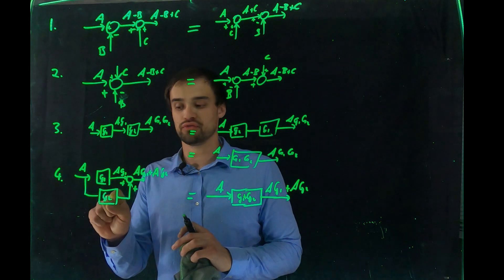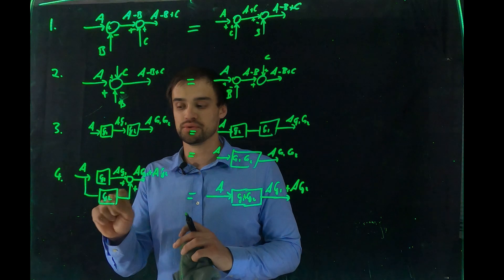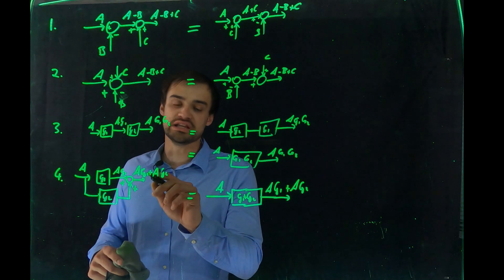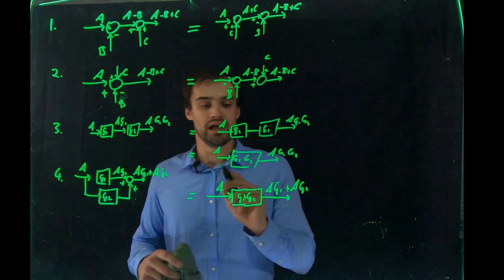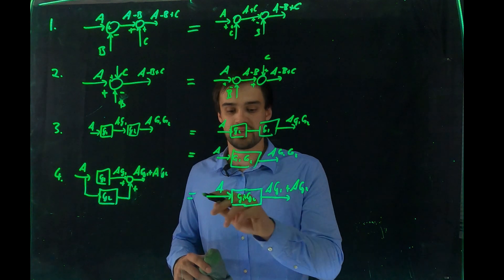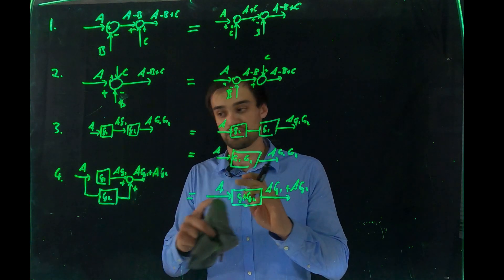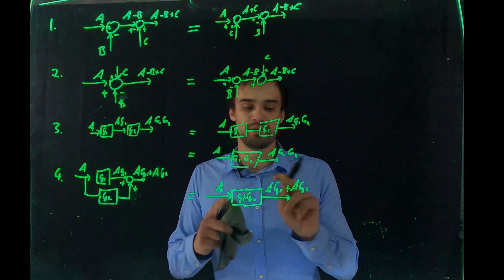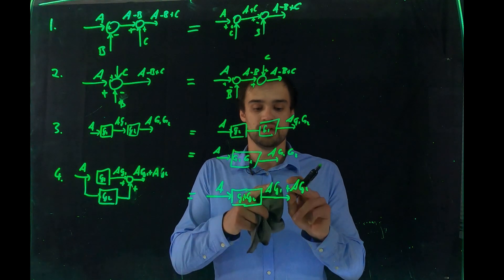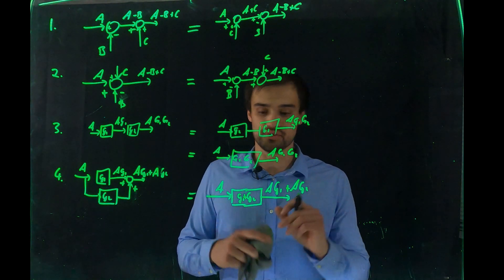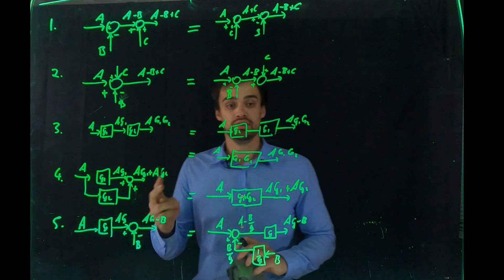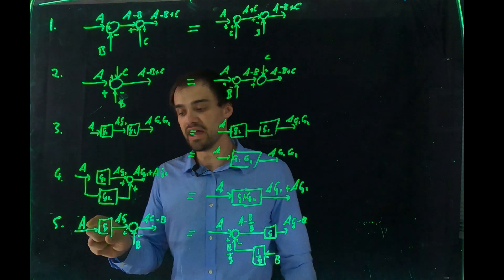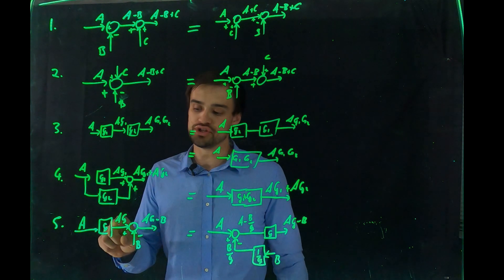Rule four says that if input A splits into parallel paths through G1 and G2, and the outputs are summed to give A·G1 plus A·G2, you can equivalently combine G1 and G2 into one block (G1 + G2) to get the same result A·(G1 + G2).